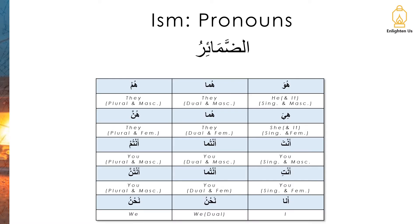In Arabic we have something quite similar, but just a few more. So we have هو، هما، هم، هي، هما، هن، أنت، أنتما، أنتم، أنتِ، أنتما، أنتن، أنا، نحن.